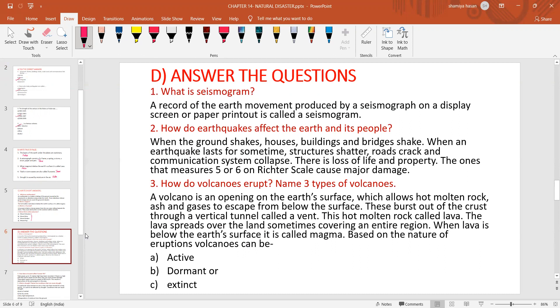How do earthquakes affect the earth and its people? When the ground shakes, houses, buildings and bridges shake. When an earthquake lasts for some time, structures shatter, roads crack and communication systems collapse. There is loss of life and property. The ones that measure five or six on Richter scale cause major damage.